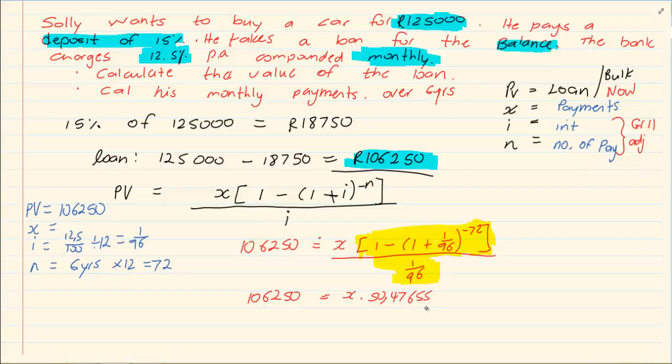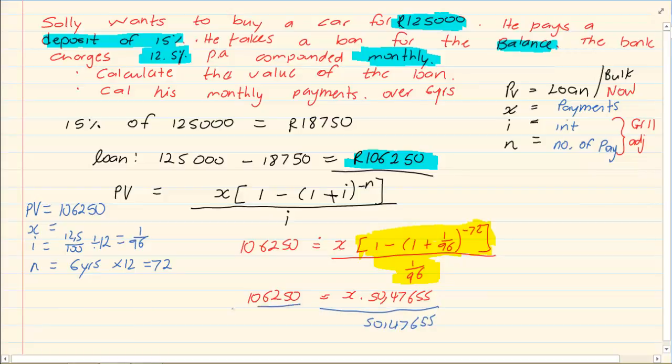To get X alone, we are going to divide by 50,47655. You should be used to your answer button. So what you should press in your calculator is 106250 divided by your answer. If you are still not comfortable with your answer button, then you could press 106250 divided by 50,47655, which will give us 2104.94. So what is his payment? His payment is 2,104.94.